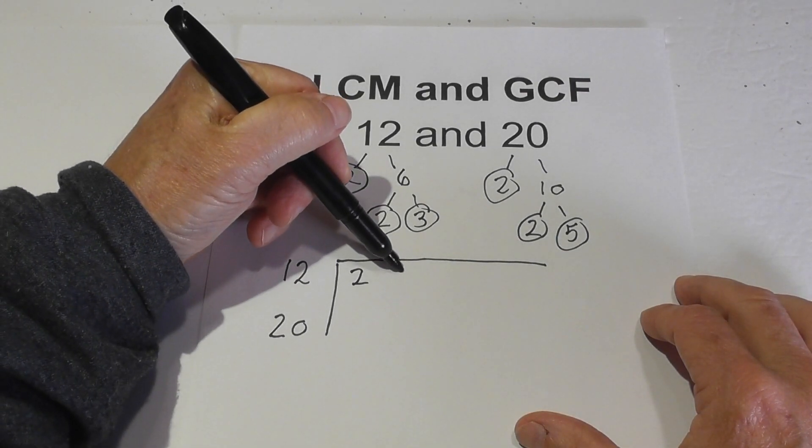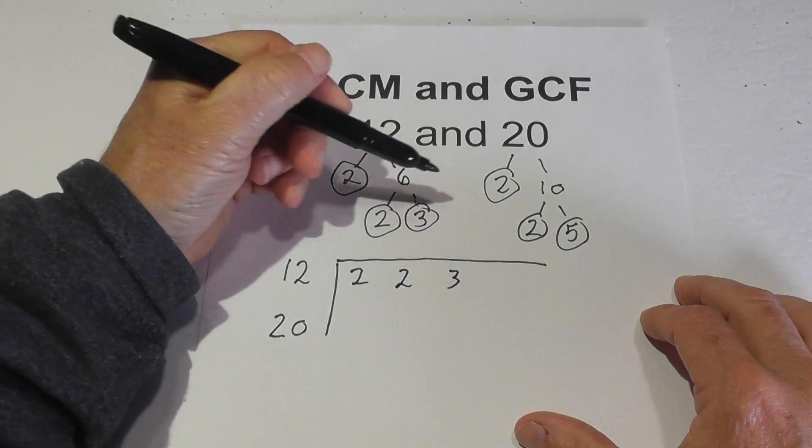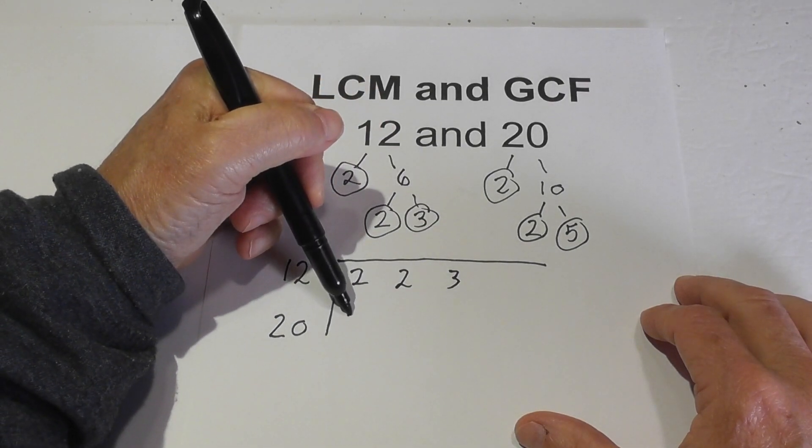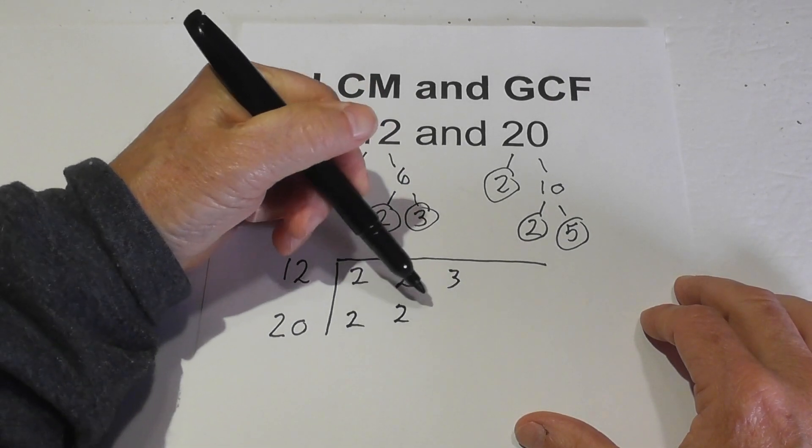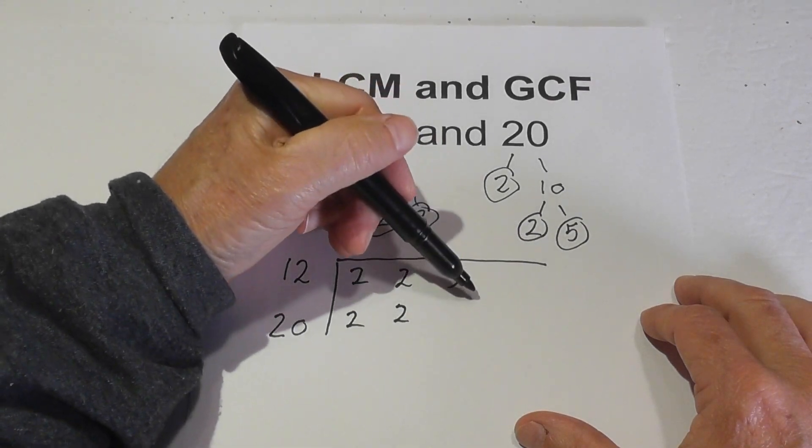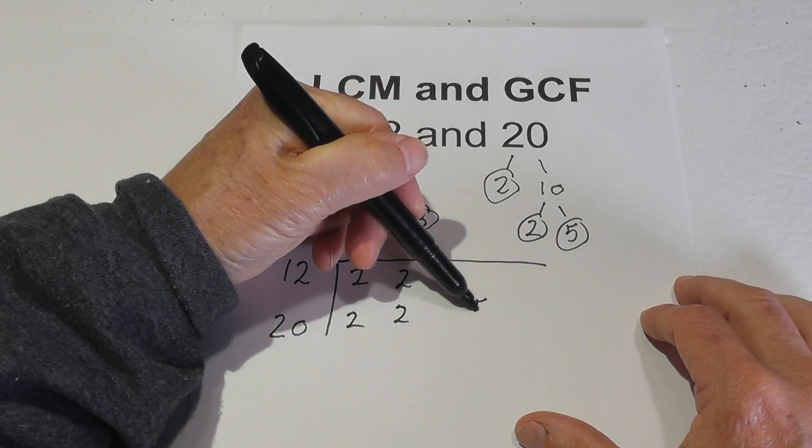For 12 we have 2, 2, and 3. And then for 20, I'm going to write 2, 2. I'm going to skip this 3 area because I don't have a 3, and then I'm going to write a 5.